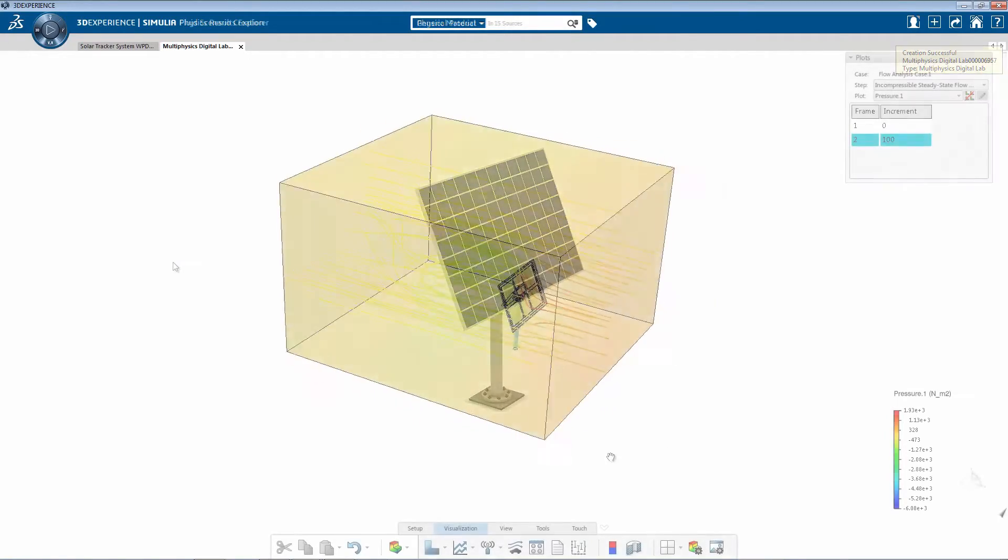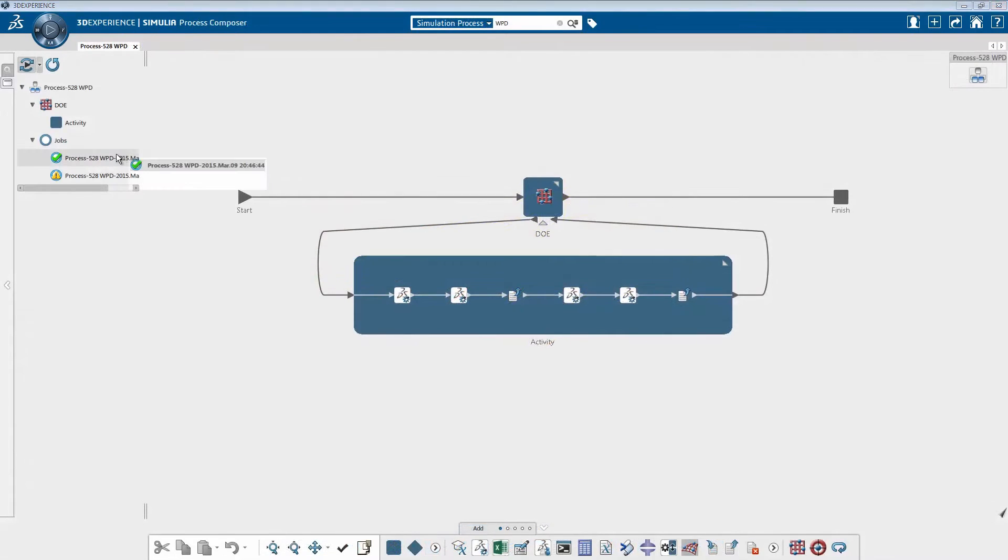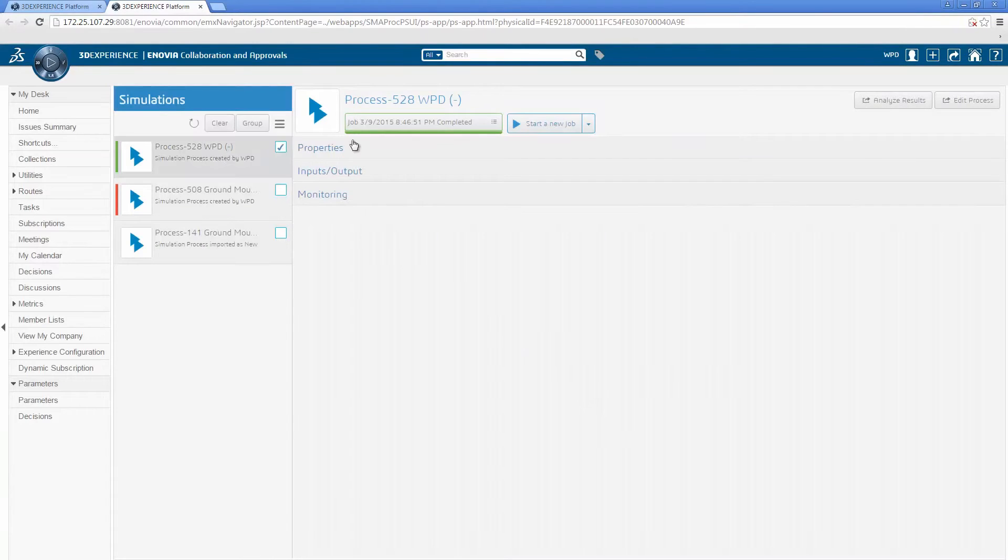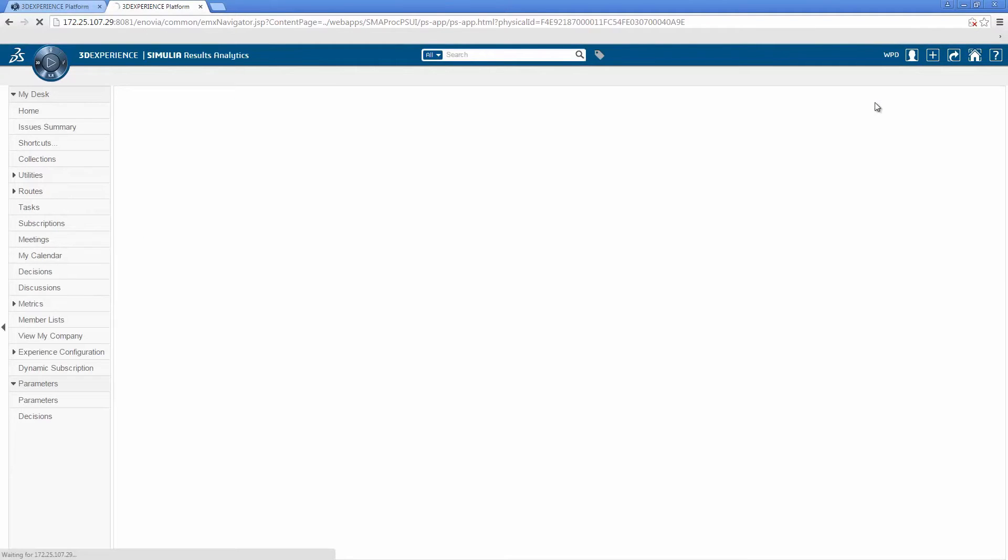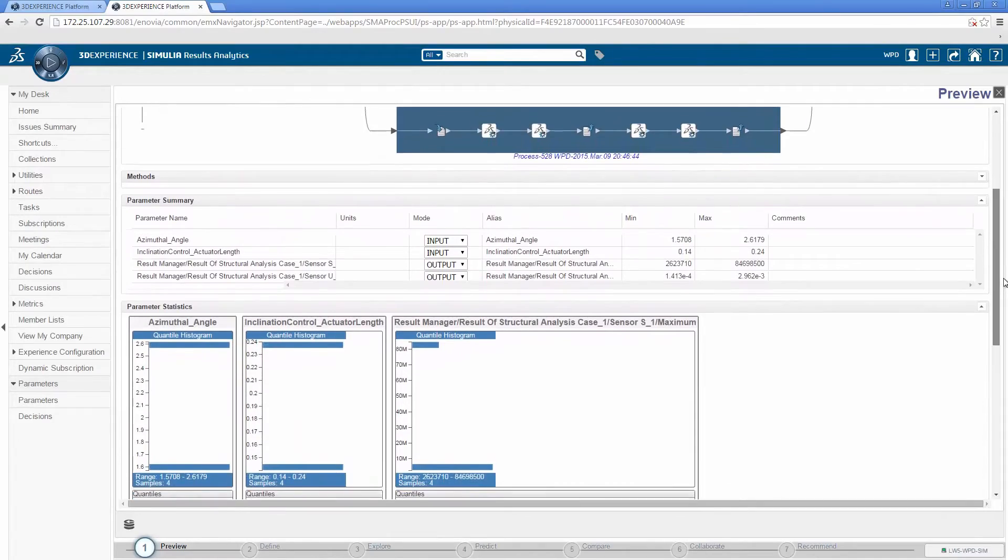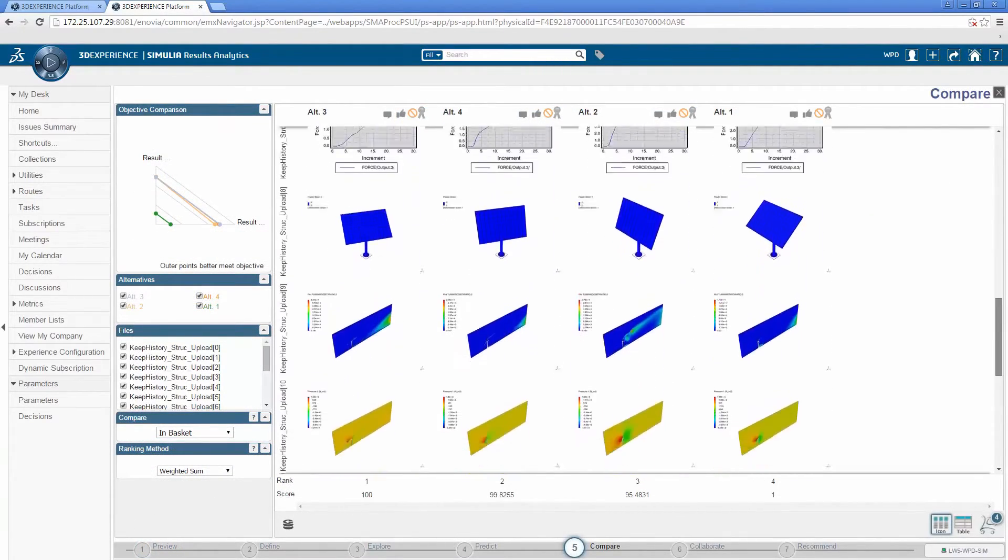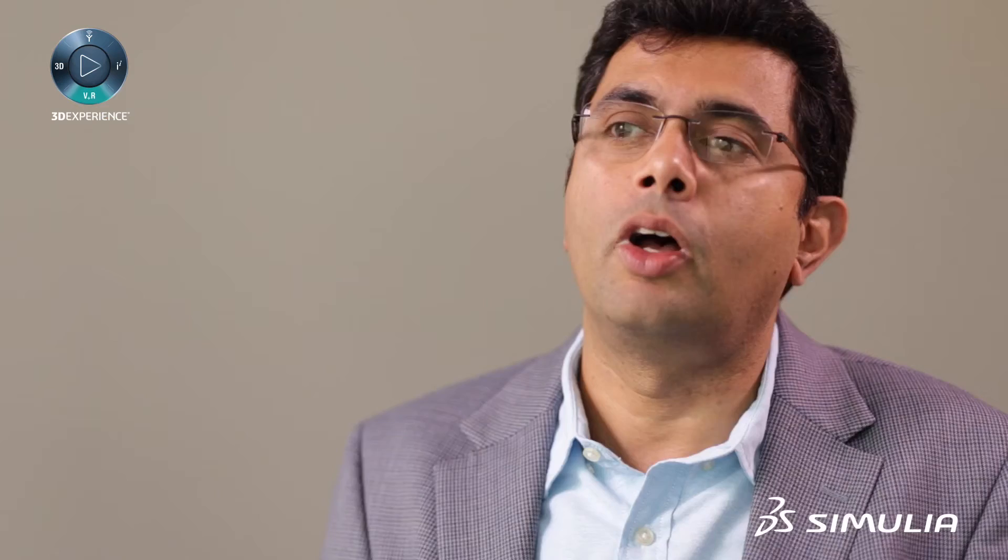You get the benefit of having design, engineering, simulation, as well as product lifecycle management capabilities all on the same platform so that the user does not need to use multiple tools. They could use the same platform and transfer the data and have the same unique and consistent user experience on the 3D experience platform.